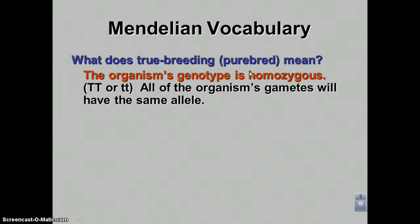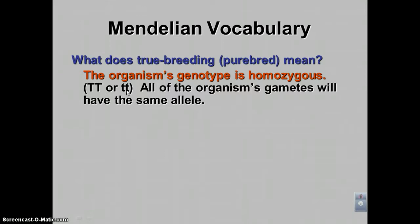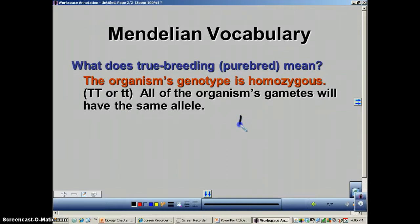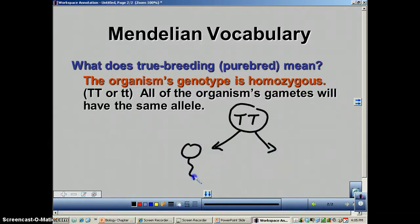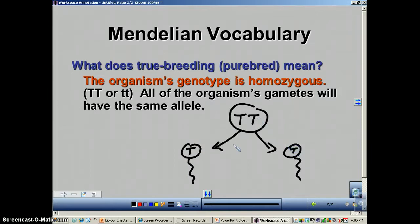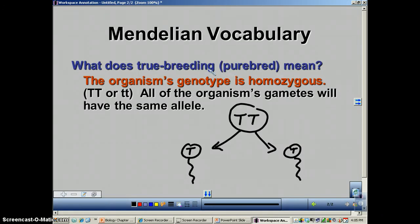True breeding, also known as purebred — these mean the same thing. This means the organism's genotype is homozygous, either homozygous dominant or homozygous recessive. When a purebred individual produces gametes through meiosis, they will always pass on the same allele. For example, a homozygous dominant individual always passes on the big T allele — half the sperm cells get big T, the other half also get big T. That individual will always breed true.